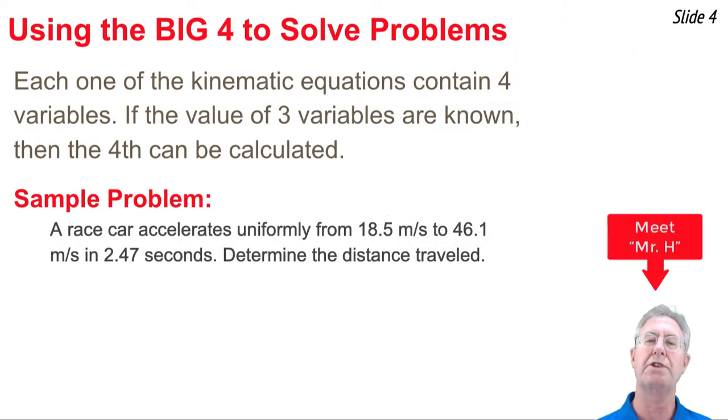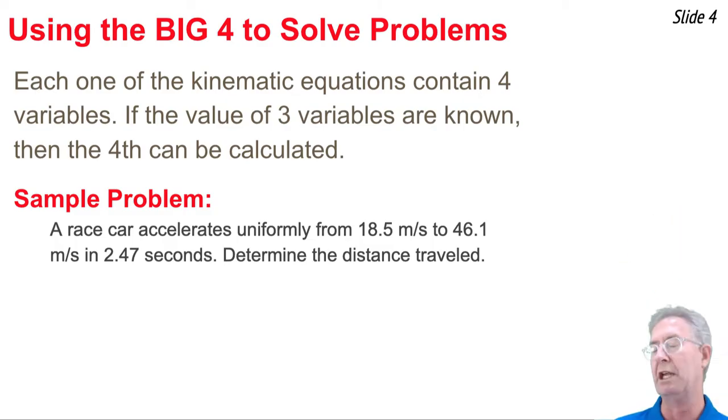As you begin to use the four kinematic equations to solve problems, your strategy is going to center around the idea that each equation contains four different variables. So if you know the value of three variables, you can solve for the fourth variable in the equation. So what you'll do when you have a sample problem like this one is you'll look for numbers and equate them with the various symbols of the equations.